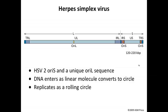Herpes simplex virus is a member of the family herpesviridae. These are viruses with rather large genomes ranging from 120,000 to 220,000 base pairs in length. Famous members include herpes simplex virus, Epstein-Barr virus, cytomegalovirus, and a few others. These genomes are double-stranded linear DNAs, and one feature is that they are present in large and short segments that can be inverted with respect to one another, giving four different combinations of L and S segments.